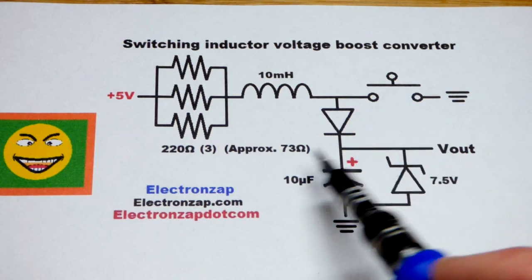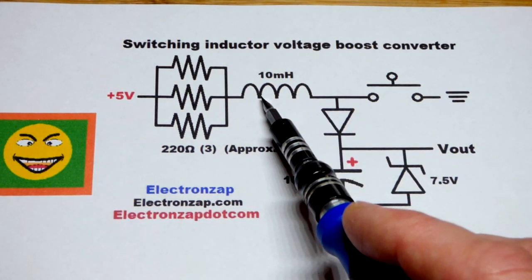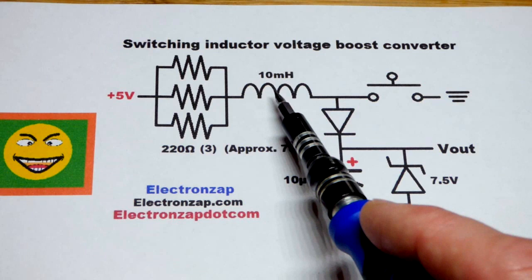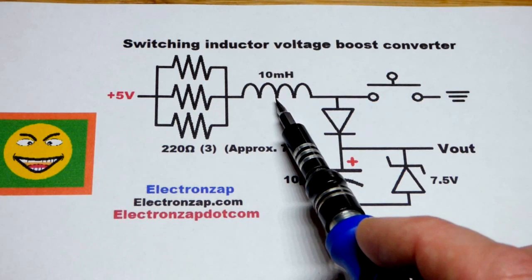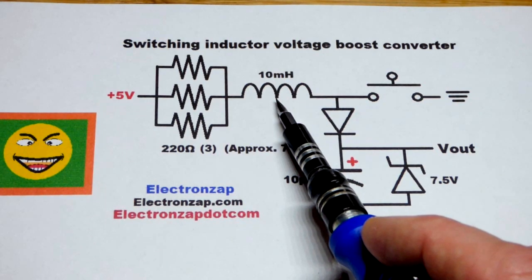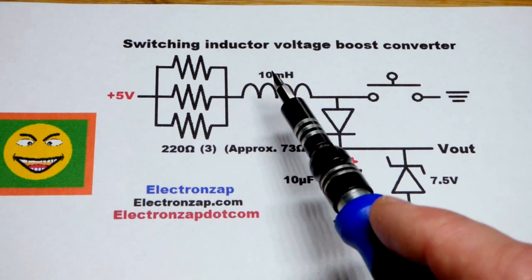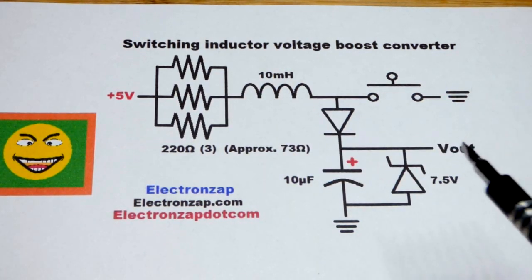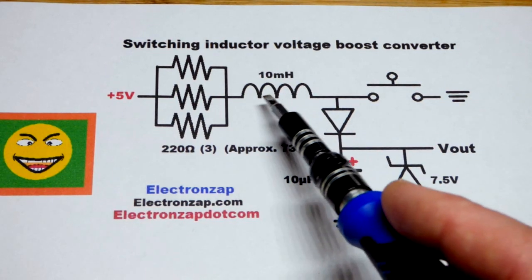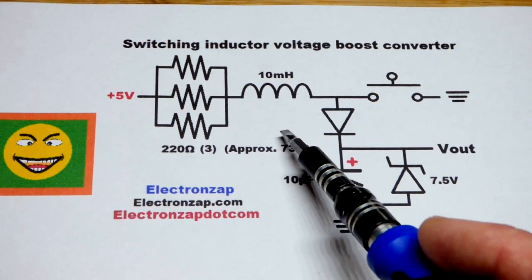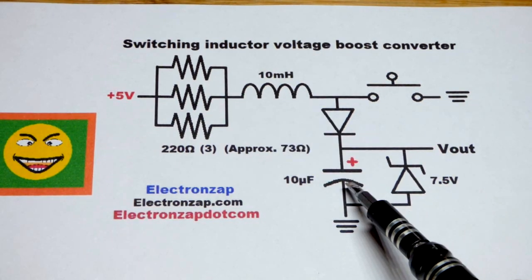We switch the inductor on and off. The reason why is inductors have the basic electrical property of not changing how much current is flowing through them instantly. It takes time for current to increase or decrease - it's relatively quick but there's still a period of time that it takes to change.